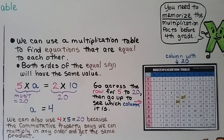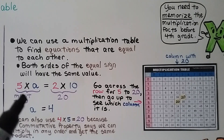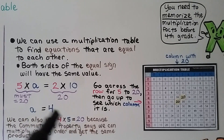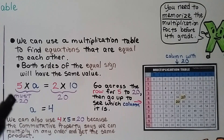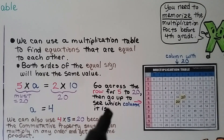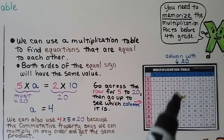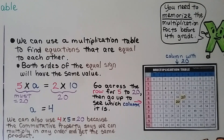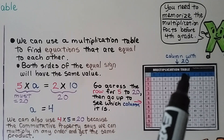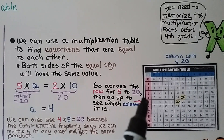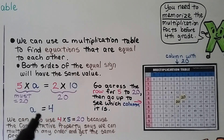We can use a multiplication table to find equations that are equal to each other. Here we have 5 times a is equal to 2 times 10. We find 2 times 10, which equals 20, so the left side must also equal 20. Going across the row for 5 to the 20, then up the column, we see it's in the column for 4, so a is equal to 4. We can also use the commutative property — 4 times 5 also equals 20 — confirming a equals 4.